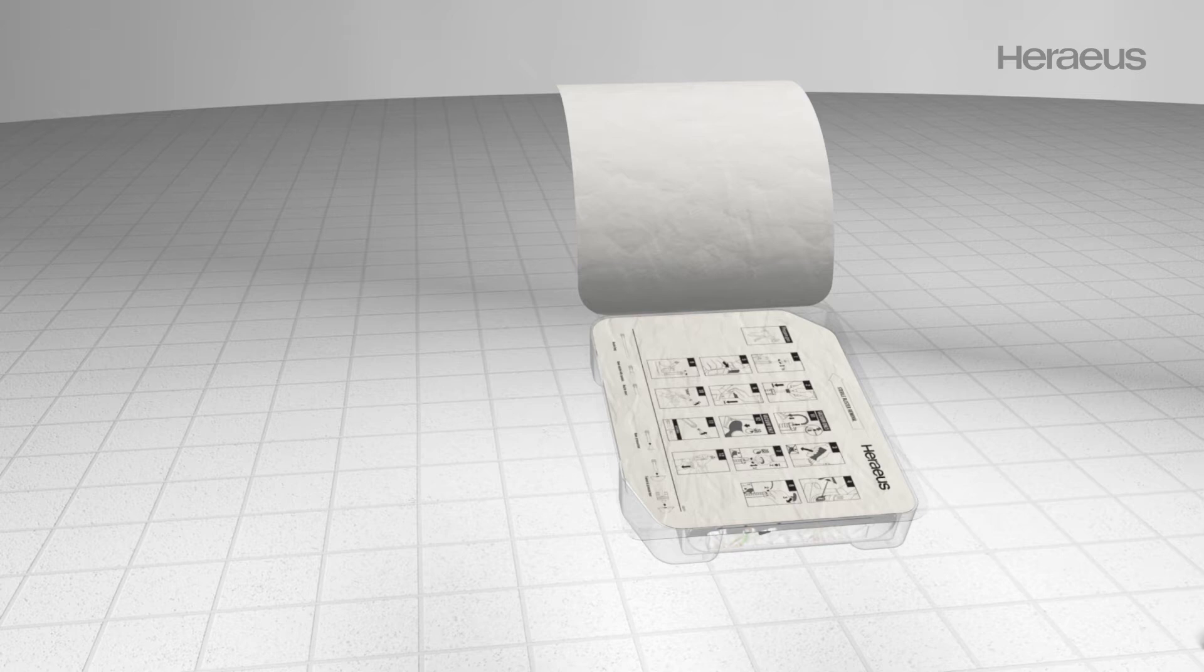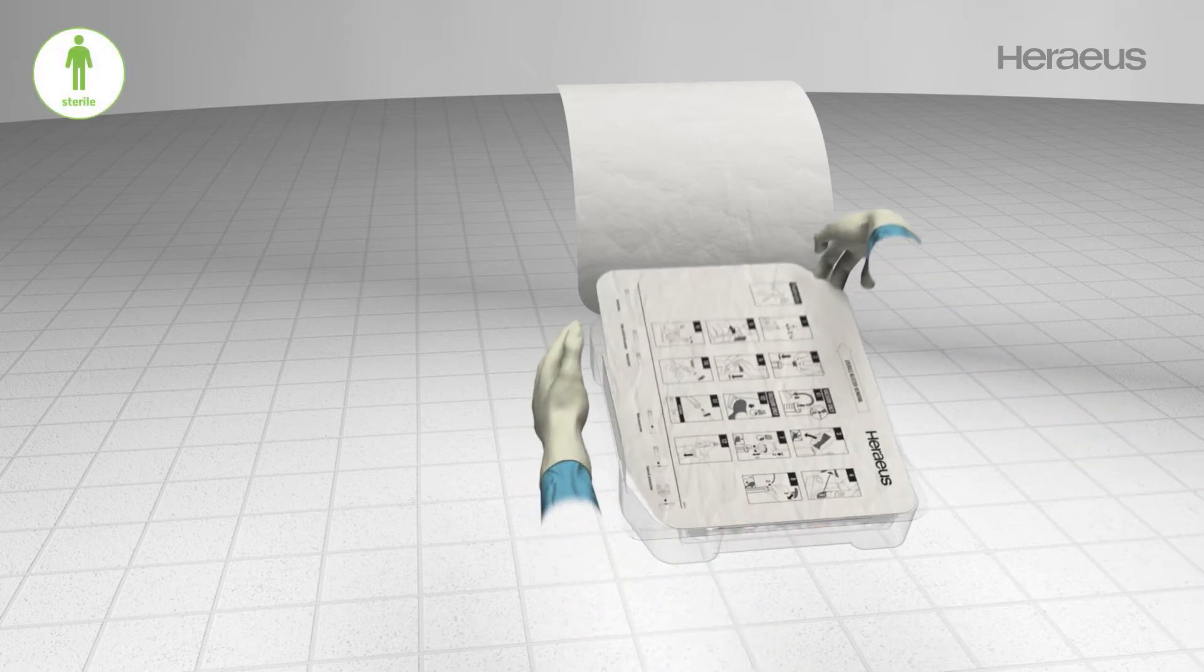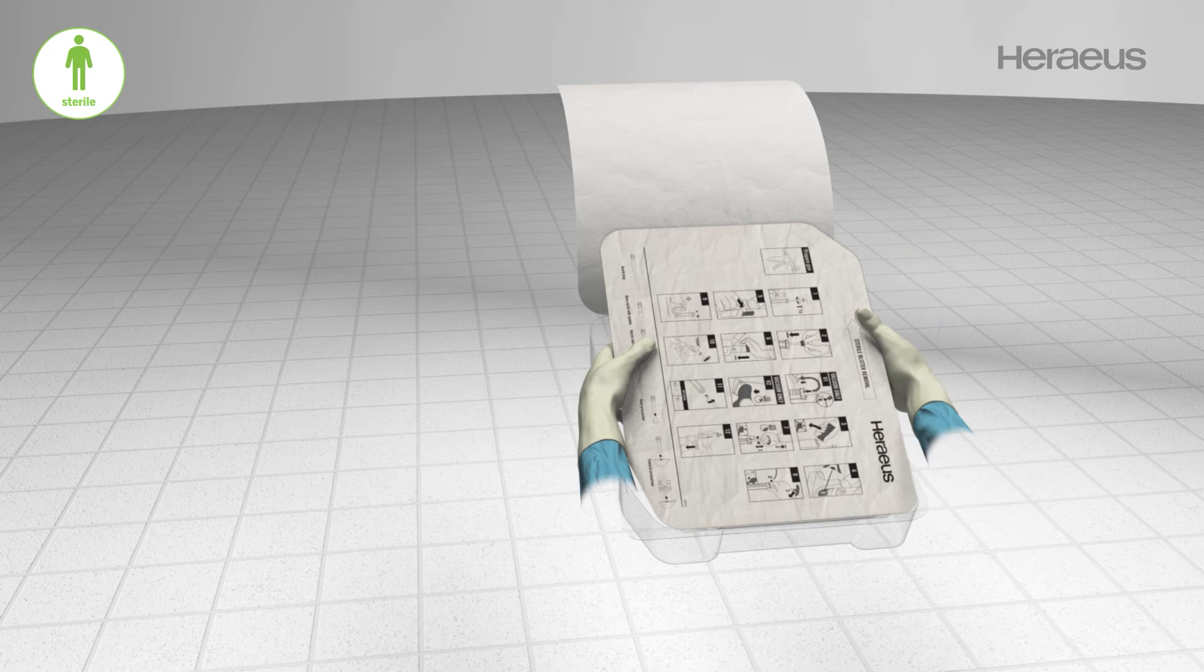For sterile removal, the sterile personnel grabs the corner of the inner blister and uses the second hand to safely take out the inner blister.